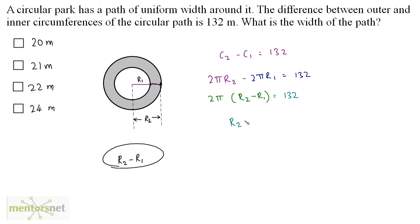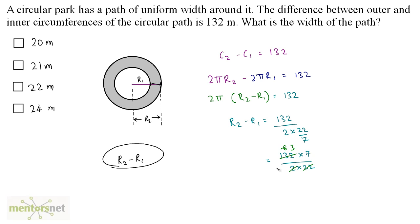So R2 minus R1 is equal to 132 divided by 2π. With π = 22/7, this becomes 132 × 7 / (2 × 22). Since 22 × 6 = 132 and 2 × 3 = 6, we get 3 × 7 = 21 meters. So 21 meters will be the width of the circular path. Option B.